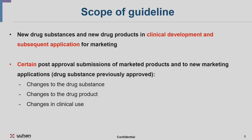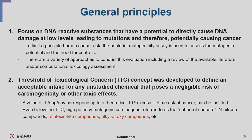The scope of the guideline applies to new drug substances and new drug products in clinical development and subsequent applications for marketing. It also includes certain post-approval submissions of marketed products and new marketing applications where changes may generate new impurities or increase the range of impurities — such as changes to the manufacturing process, formulations, indication, or dosage changes that affect impurities.